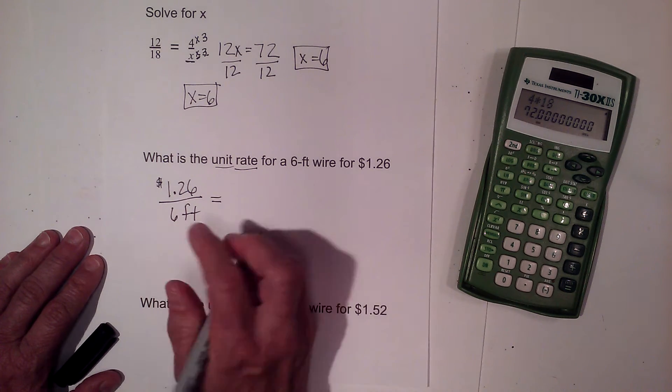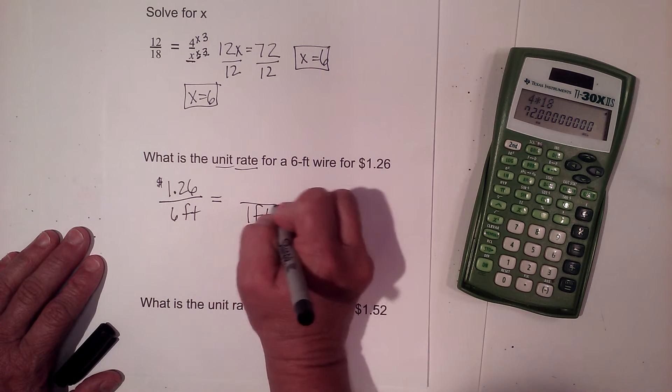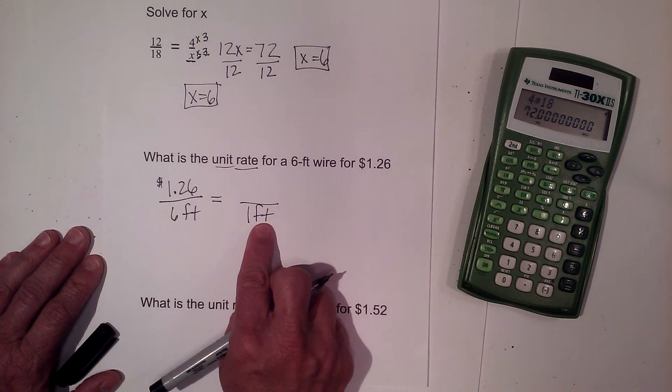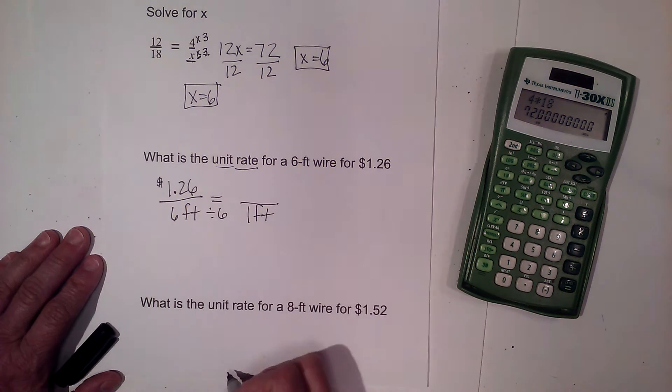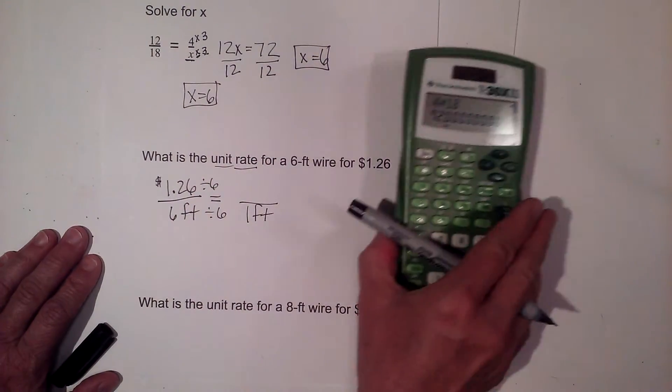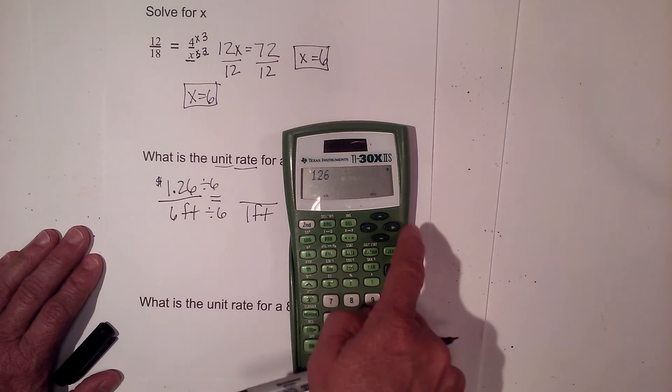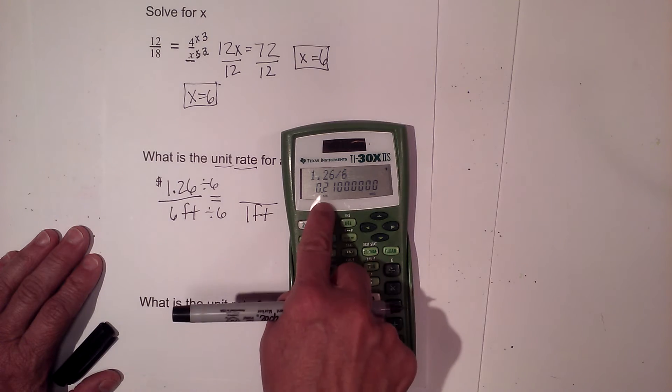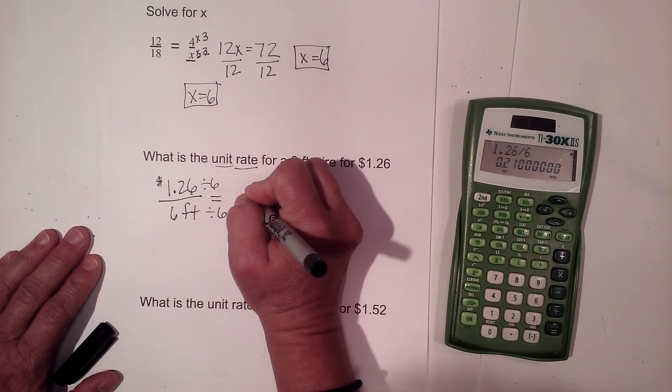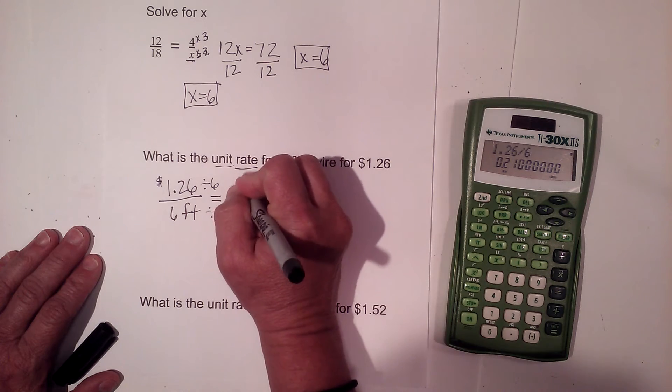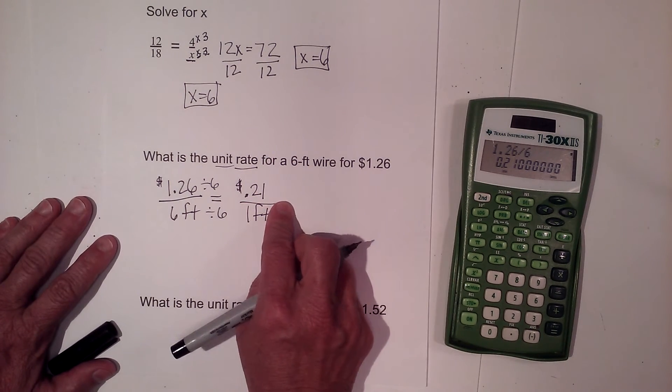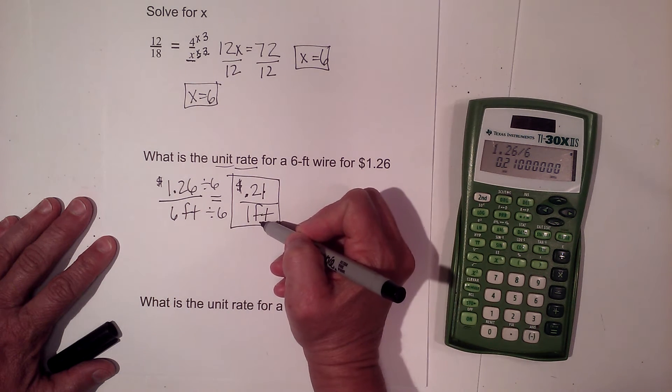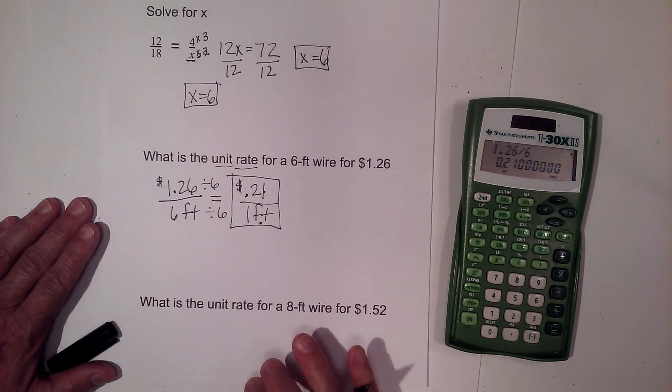For $1.26, I get 6 feet of wire. Well, what if I want 1 foot of wire? How much is my unit? So what does 1 foot cost me? I'm taking 6 and I'm dividing it by 6 to get 1. So I've divided my denominator by 6, which means I need to divide my numerator by 6. So let's take $1.26 and divide it by 6. And that gives me $0.21. So $0.21 is for one unit or one foot of wire.